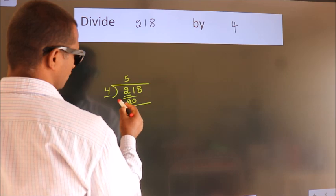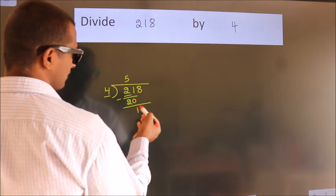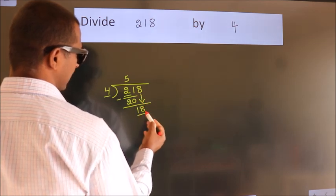Now we should subtract. We get 1. After this, bring down the beside number. So, 8 down. So, 18.